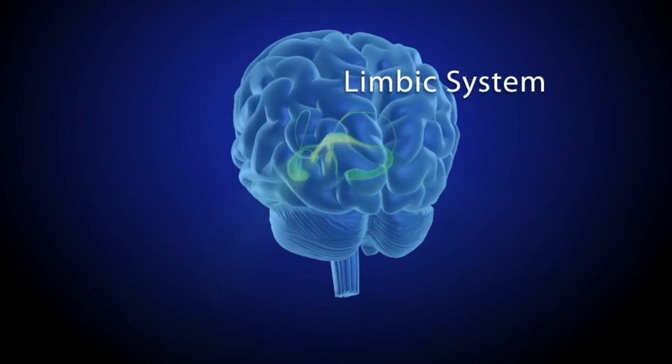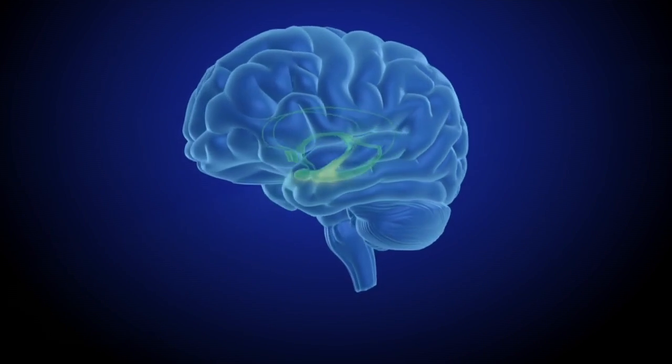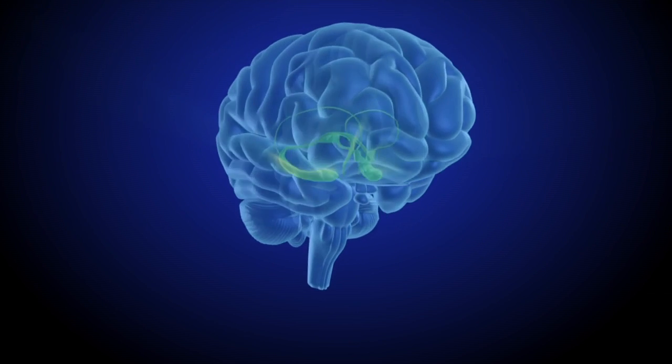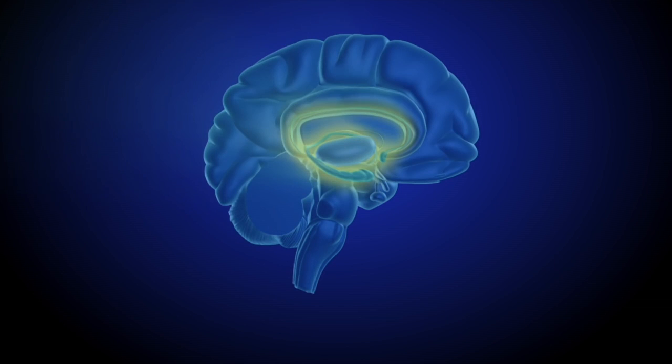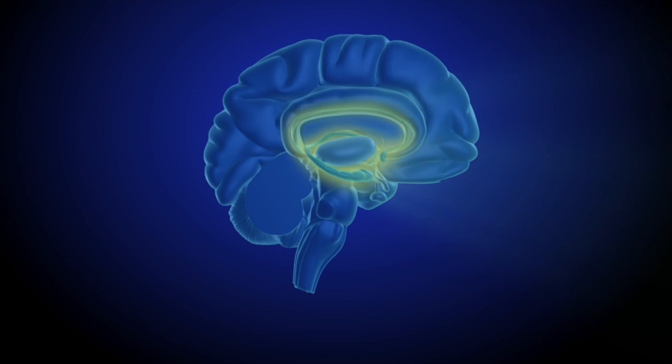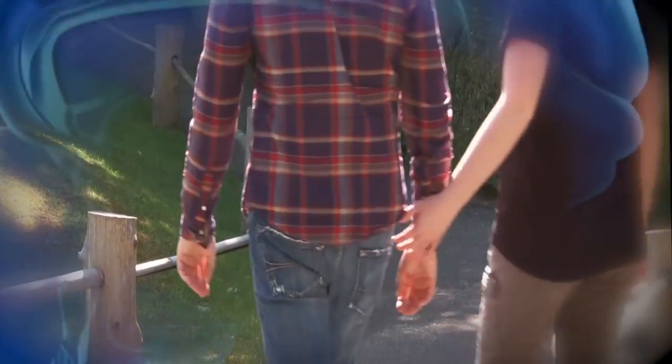Deep within the brain is a set of structures called the limbic system. The limbic system contains the brain's reward circuit, or pathway. The reward circuit links together a number of brain structures that control and regulate our ability to feel pleasure.